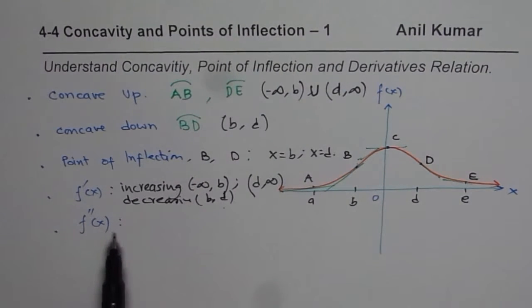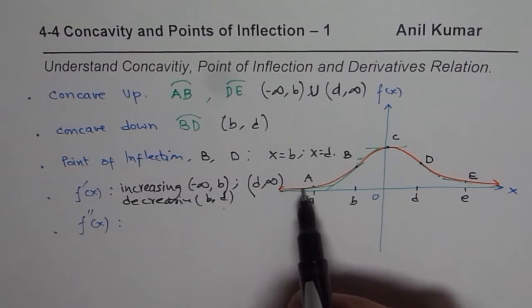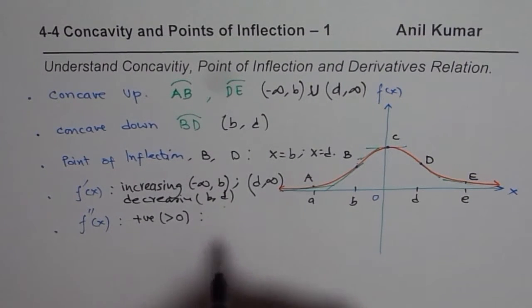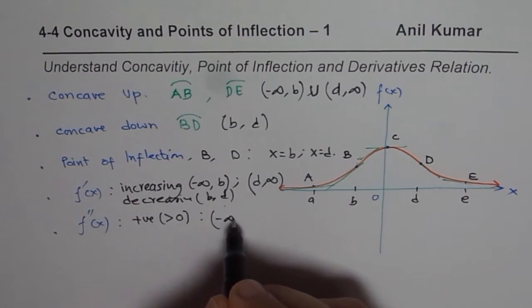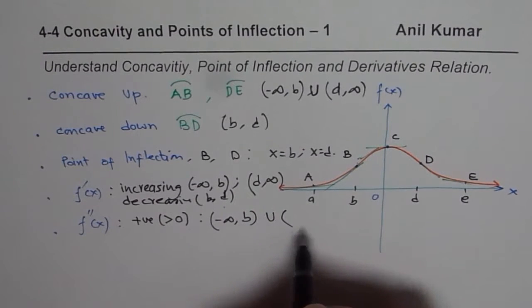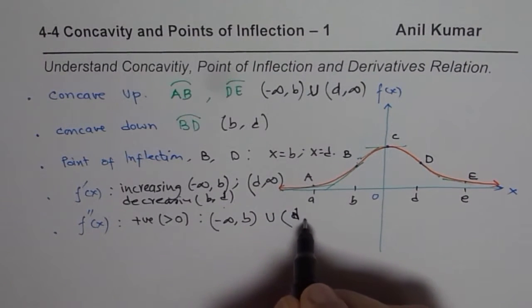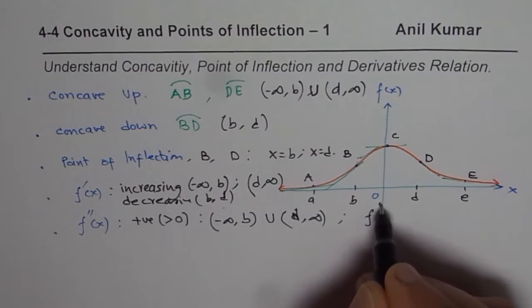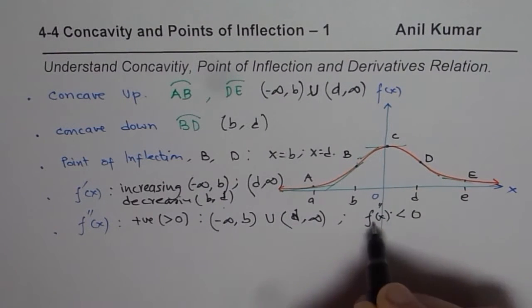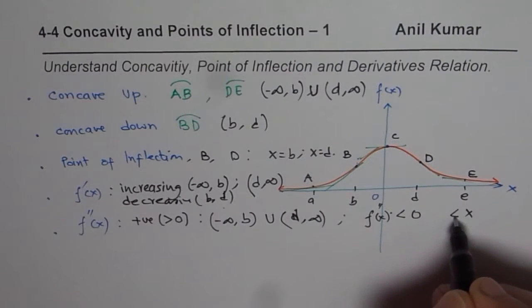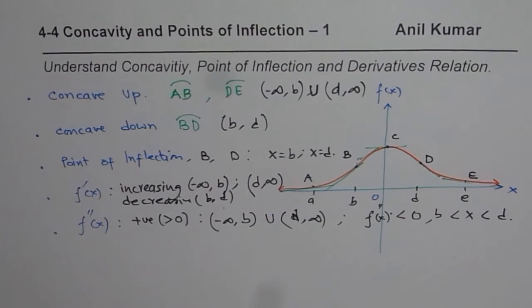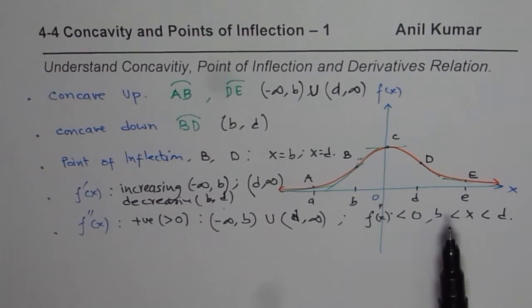And also, you will notice that the second derivative, it is concave up, means second derivative is positive. So it is positive or we could say greater than zero for the interval when it is concave up, which is minus infinity to b, which is minus infinity to b and from, I'm using d small letter for the x values, so it is positive. However, it is f double prime second derivative is less than zero or negative when x is between b to d.